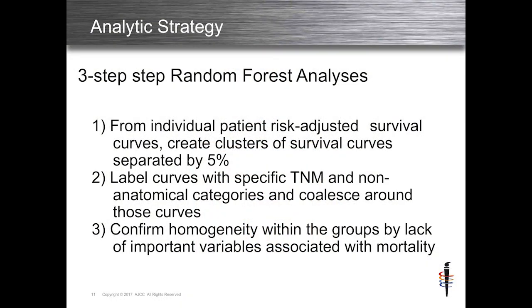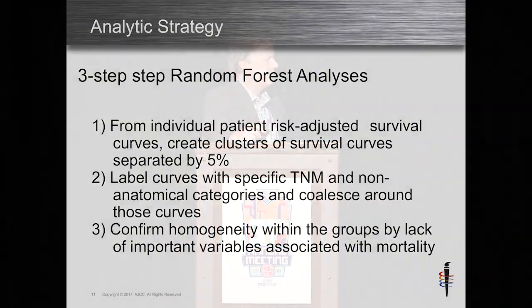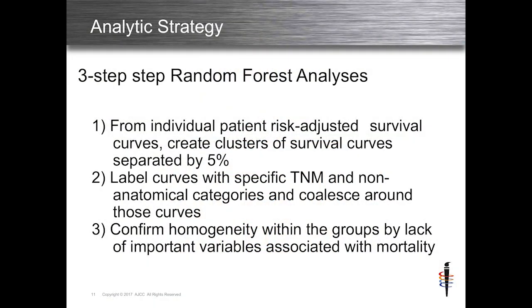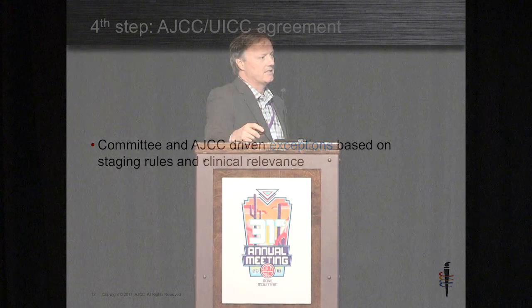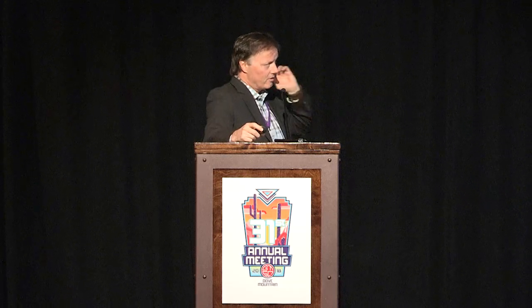They went through a three-step random forest analysis, and from individual patient risk-adjusted survival they created clusters, trying to separate survival curves by more or less 5% so that you have a relatively homogeneous group of patients without a lot of heterogeneity within one stage group. The curves are labeled by non-anatomic and TNM variables and coalesce around the curves, then we confirm heterogeneity. A fourth step was the committee — we looked at the data and decided: does this make sense clinically? Is this the staging system we want to put our names on?